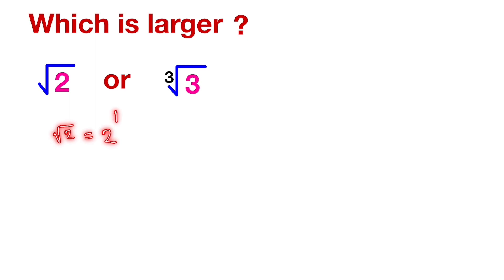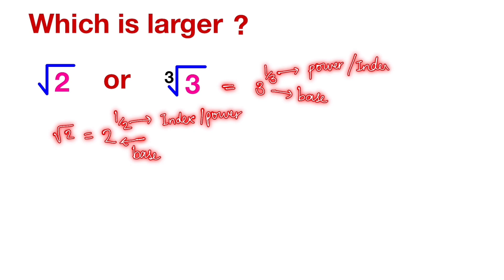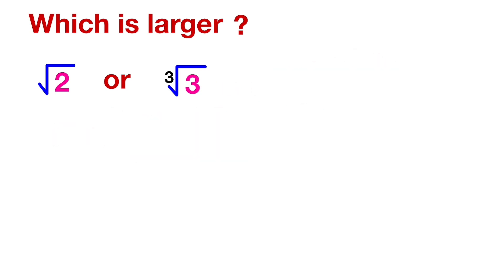We can write root 2 as 2 raised to 1 by 2, where 2 is the base and 1/2 is the index or power. Similarly, cube root 3 can be written as 3 raised to 1 by 3, where the base is 3 and the power or index is 1 by 3.